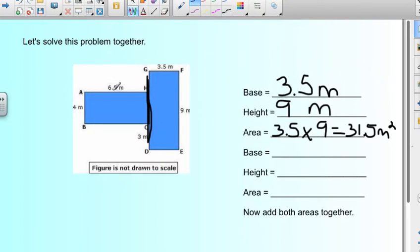Now we're going to look at this one. The base is 6.5. And then we have the height is 4 meters. And when we multiply 6.5 times 4, we get 26 meters squared. And I'm going to make sure that I label it. I don't want to be lazy.